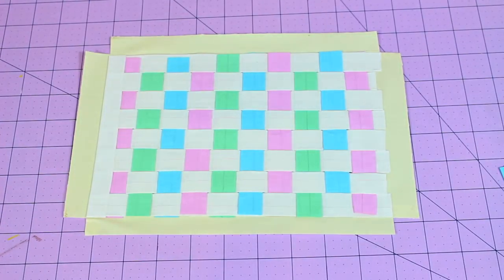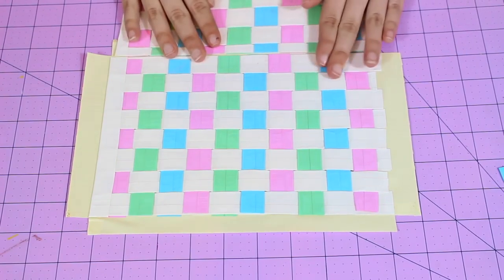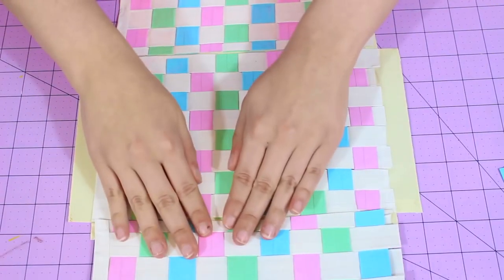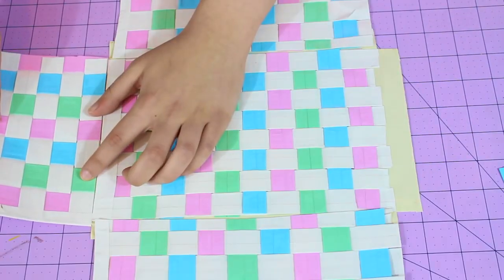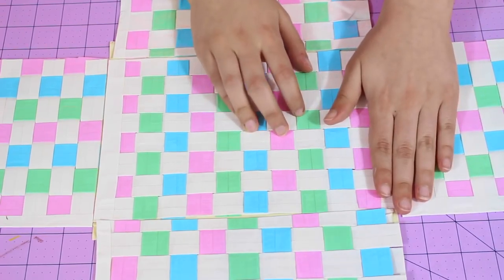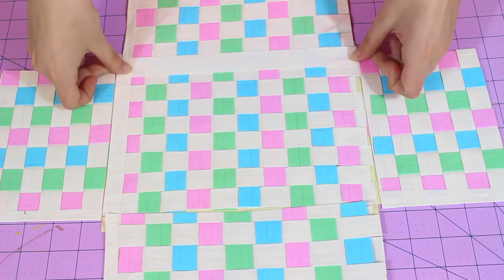Now that you should have something like this, we're going to bring in our other panels and we're just placing it on the adhesive that is showing. And cover the inside where the adhesive is showing.